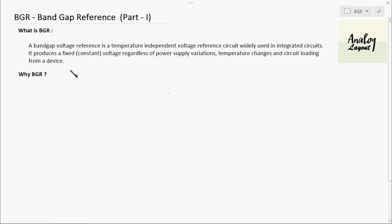We get output voltage variation due to two common reasons. The first is power supply variation — whenever there is input power supply variation, the output voltage is affected. The second is temperature variation. All electronic components depend on temperature, and because of changes in device performance with temperature, the output voltage of any circuit is affected. For these two reasons, we use BGR.